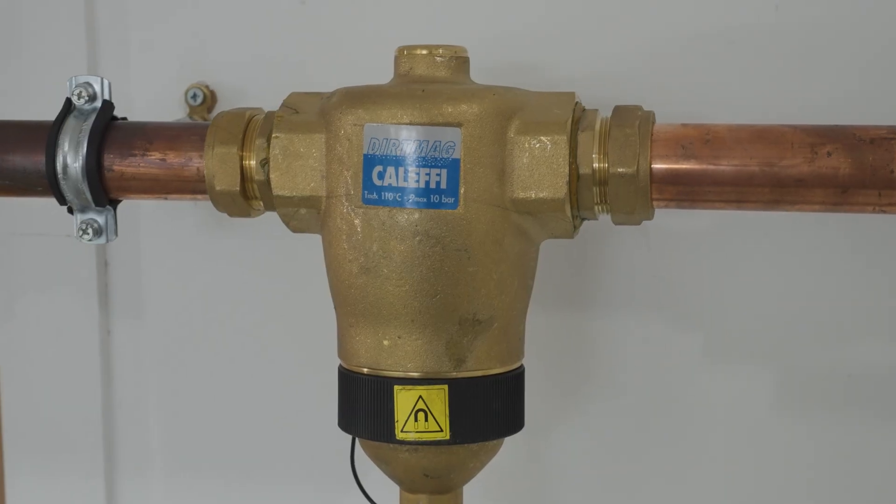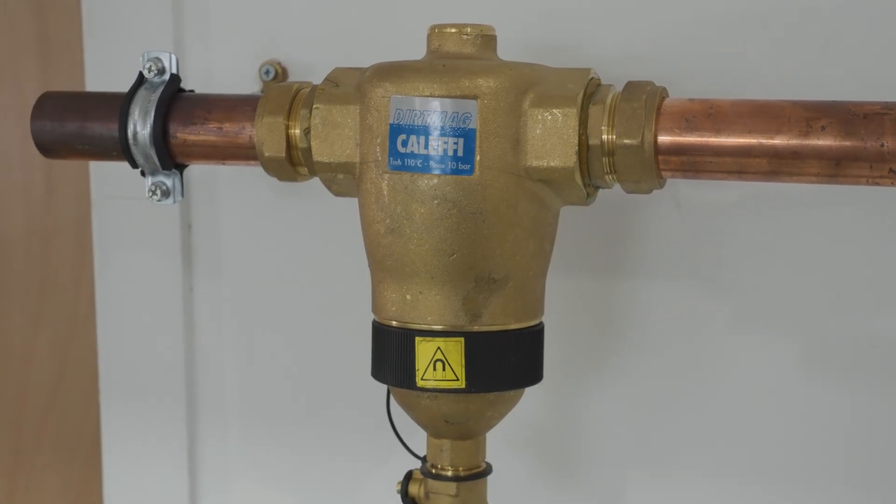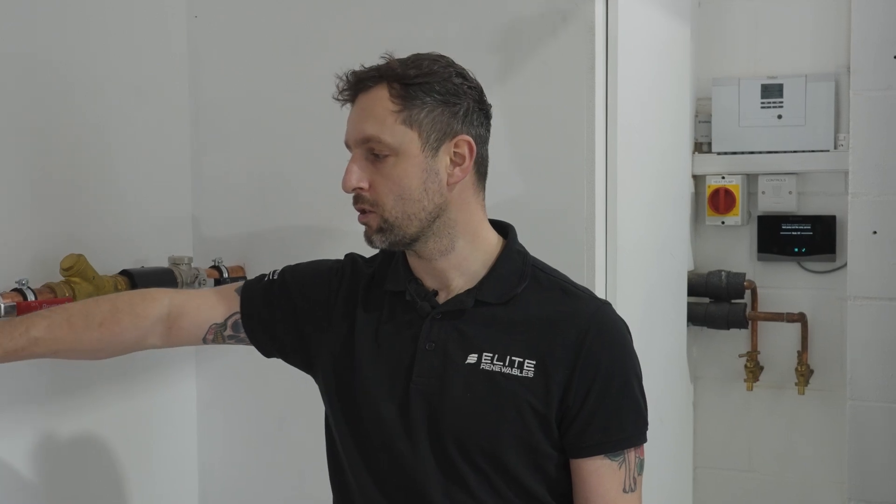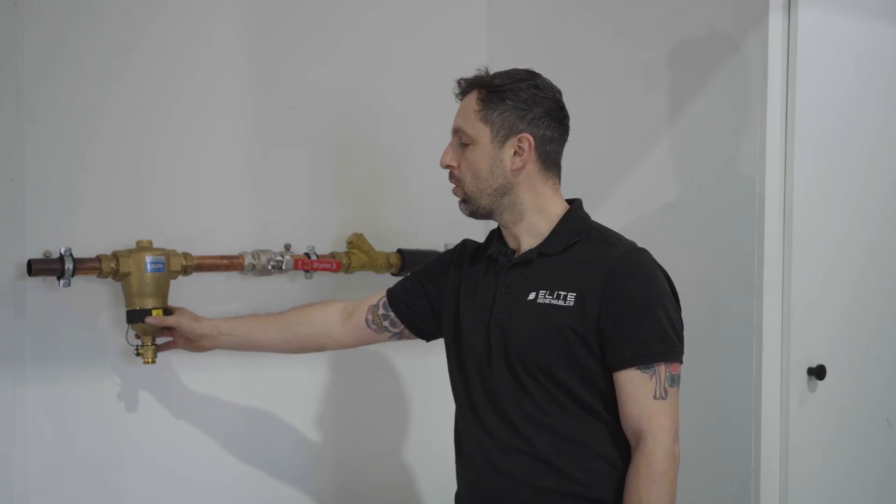So if we look at these filters on the wall we've got a couple of different types. This one is a magnetic dirt filter. They look similar to this, they could be black, they could be silver, they could be brass like this one. The idea of these is they've got magnets around the sides. What they will do is collect the deposits that are coming off your radiators.